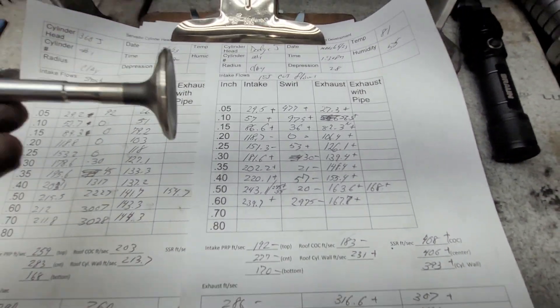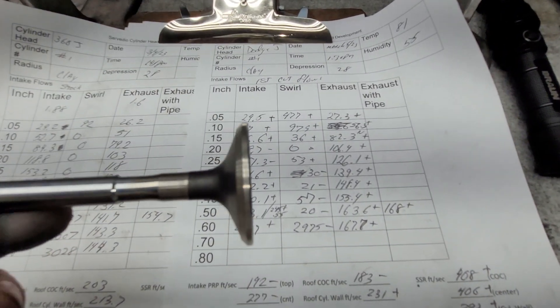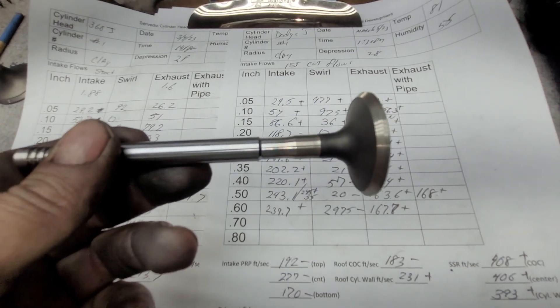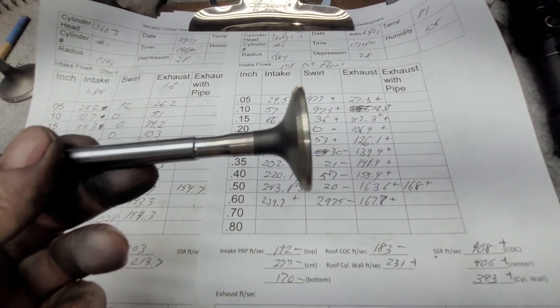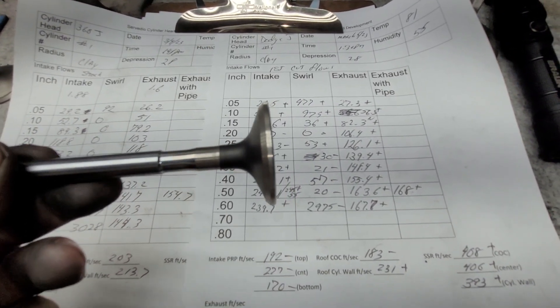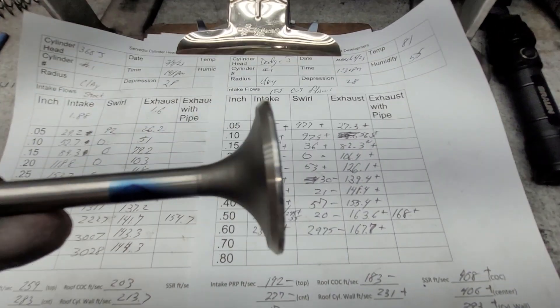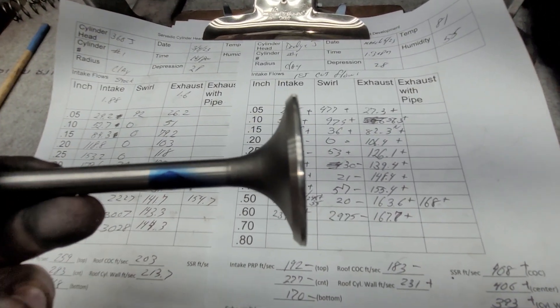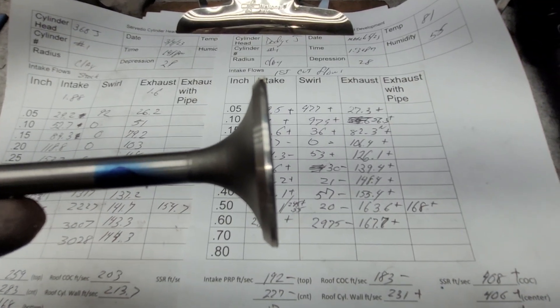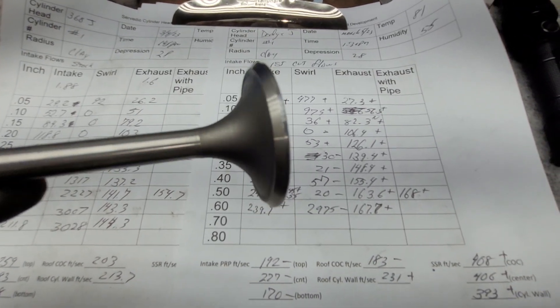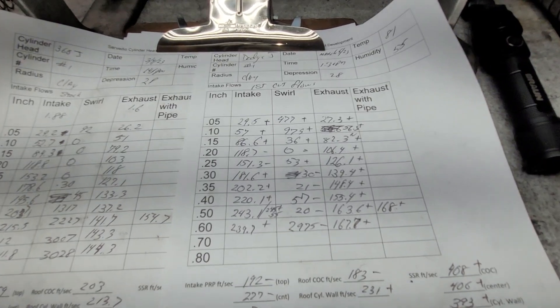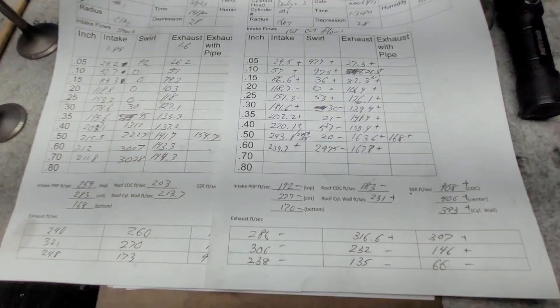You know what it doesn't have? It doesn't have as much of a tulip as most Chrysler valves have. I don't think this does. That looks very similar to the 318 valves that I've got with the heavy tulip. It's a heavy valve.